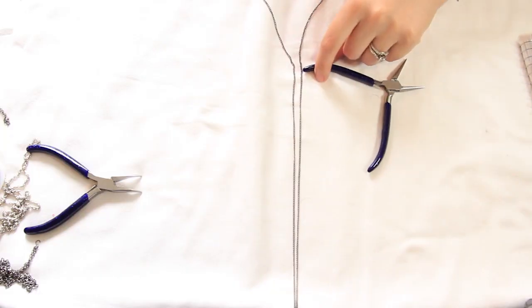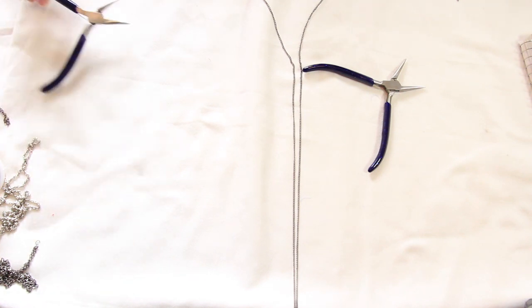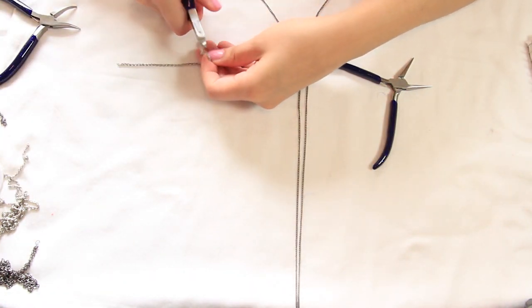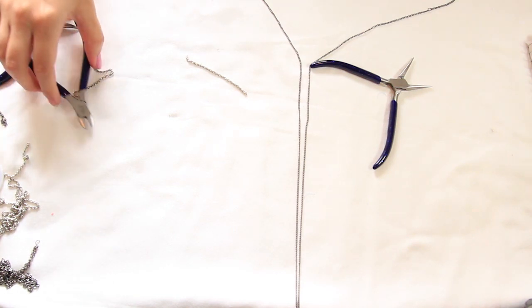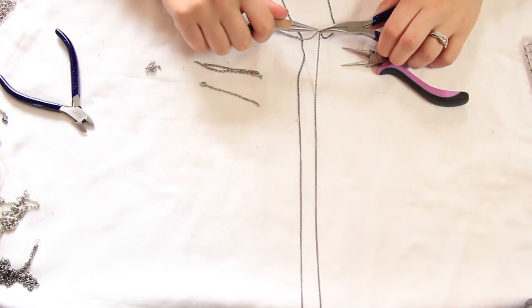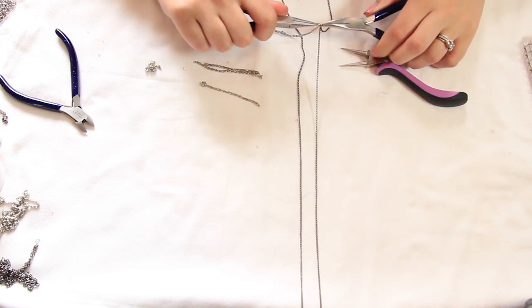So now you're going to get another chain. This is a different type of chain, this is a more silver chain, and I'm gonna cut it into two-inch pieces. I'm gonna use four of them. And then I'm gonna connect a jump ring and connect it to one of the chains. Try to do it directly across and connect it.